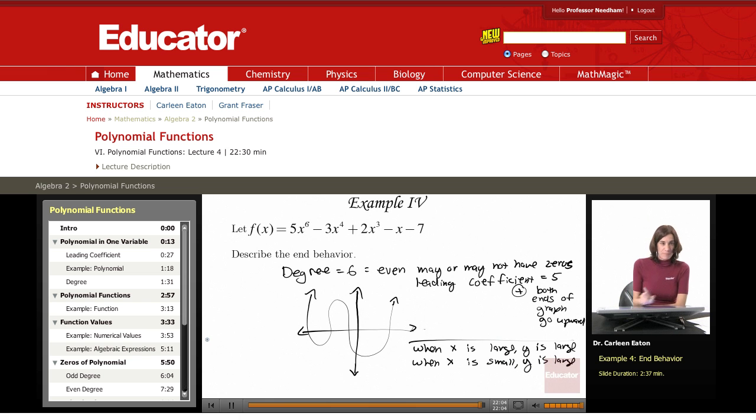So at the ends, at both ends, x very large or x very small, the function has large values. And that tells me about the end behavior. And I was able to figure that out by realizing this is an even degree, and it is a positive leading coefficient.